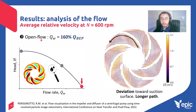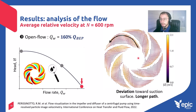Then we reach the open flow condition, basically 160% of the flow rate corresponding to the BEP — we are now here in our head curve. We can see that the flow structure becomes a little more complex again. The streamlines are now deviated toward the suction surface of the blades and they have a longer path.